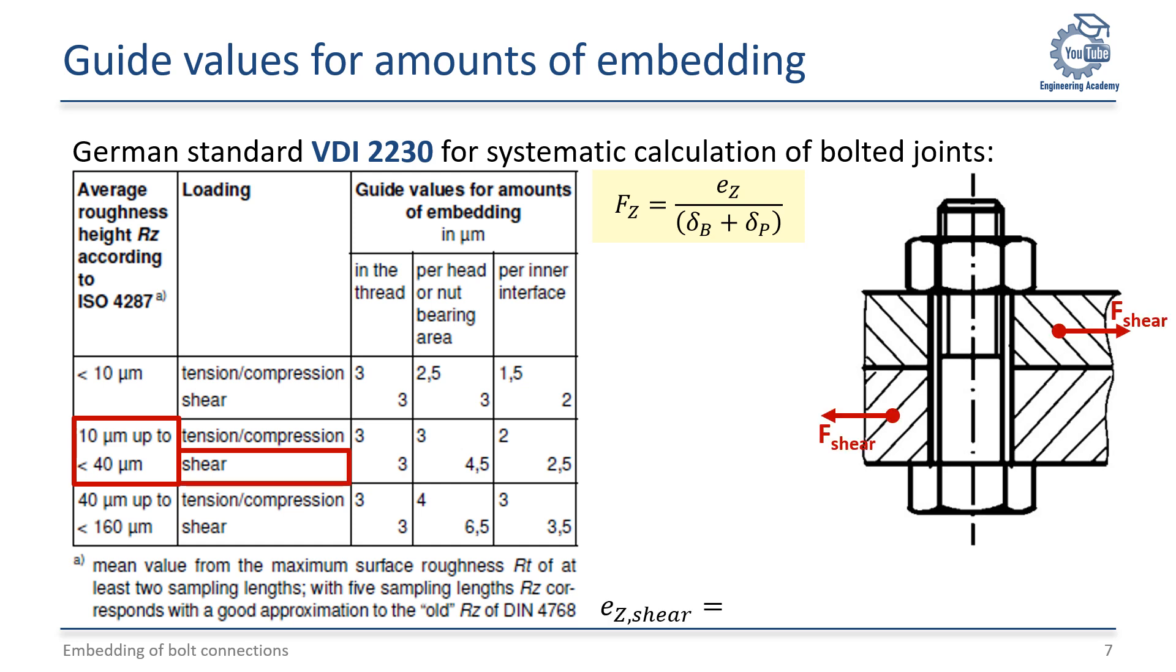Under shear load, the lower middle row applies. Accordingly, 3 micrometers occur in the thread, 4.5 micrometers at both the head and the nut surfaces, and 2.5 micrometers in the contact area between the clamped plates. The total embedding amount therefore is 14.5 micrometers.